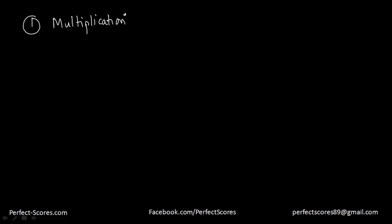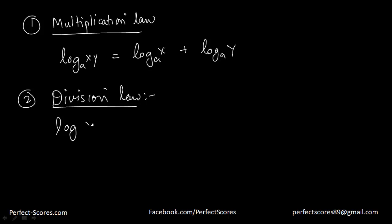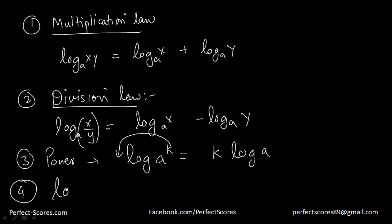So let me summarize all the laws. The first law is the multiplication law: the logarithm of x times y to the same base is equal to logarithm of x to the same base plus logarithm of y to the same base. The second is the division law: log of x over y to the base a is equal to log of x to the base a minus log of y to the base a. The third is the power law: log of a to the power k is equal to k times log of a. And the fourth law is that log of 1 over x is equal to negative log of x.